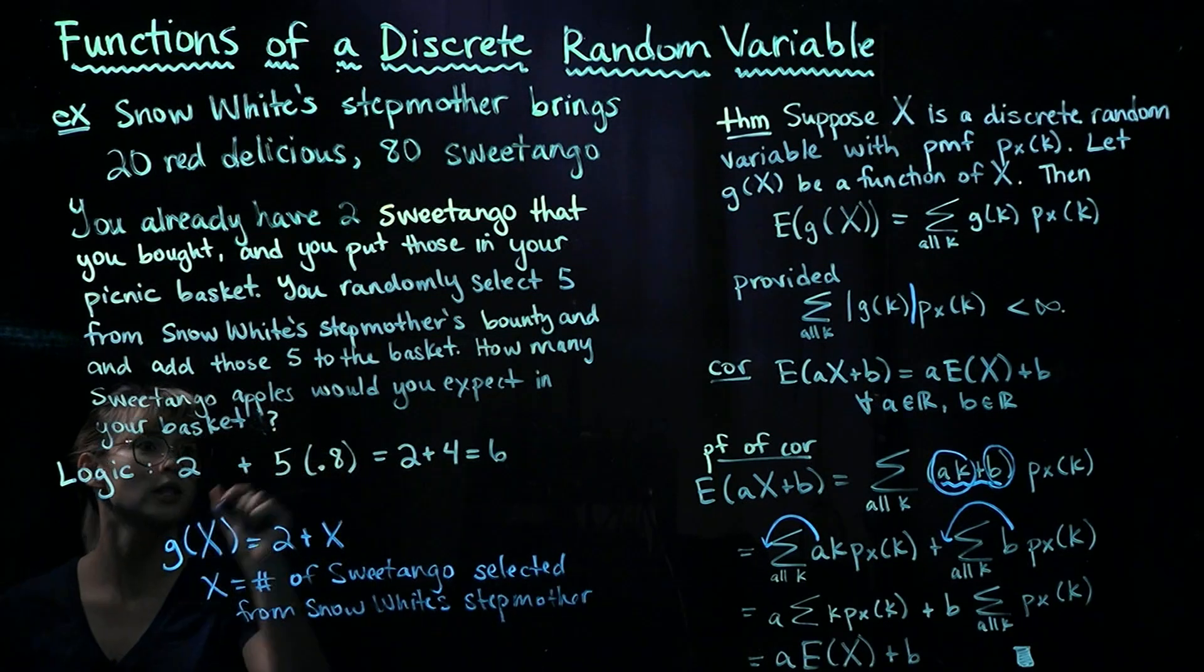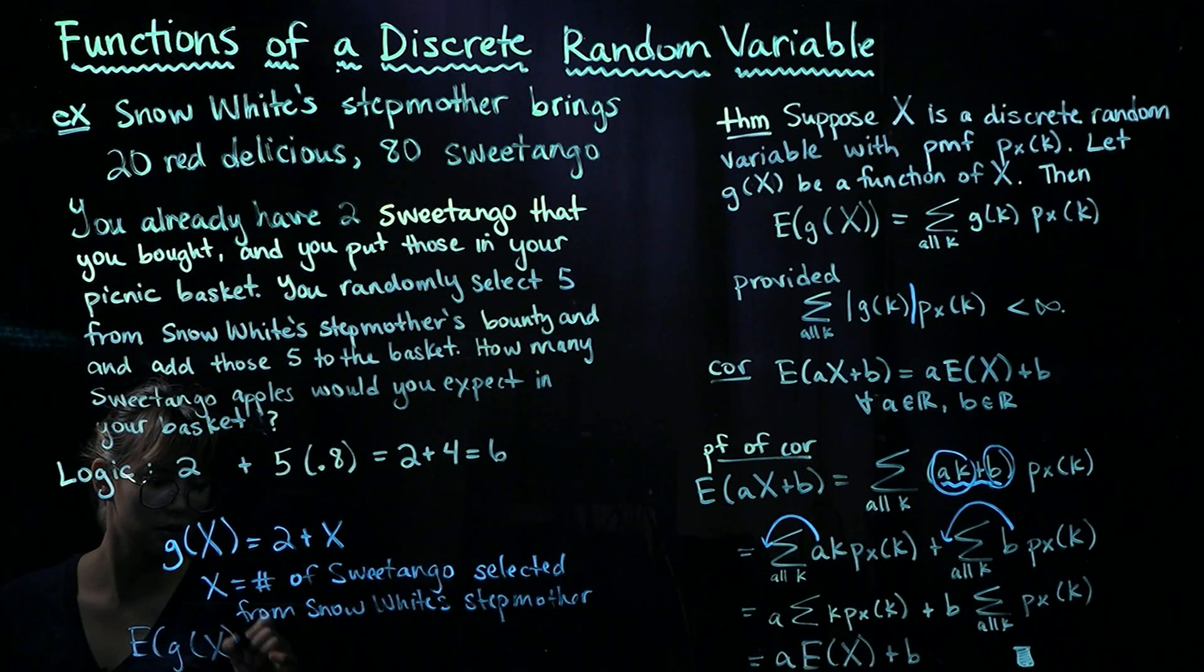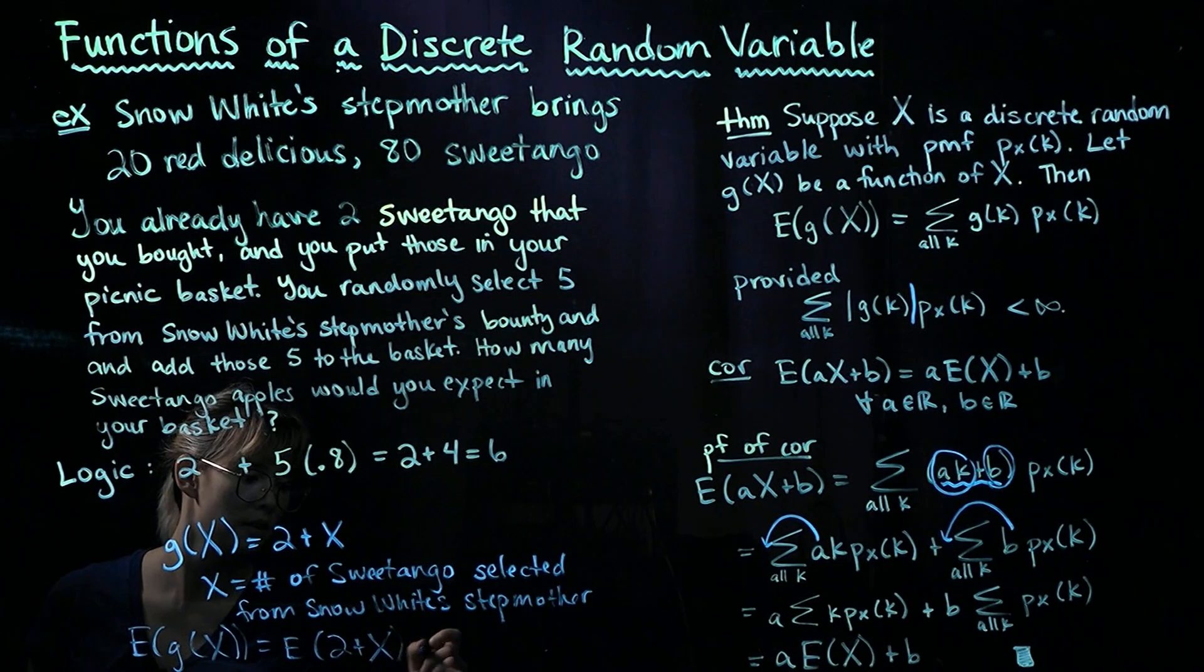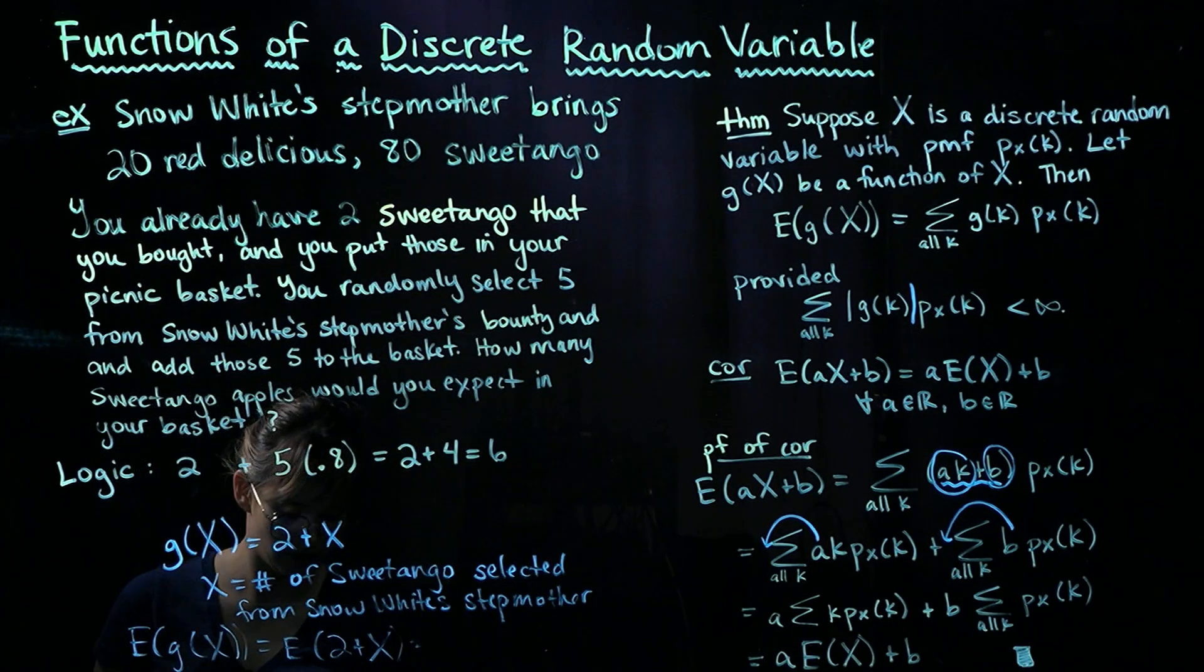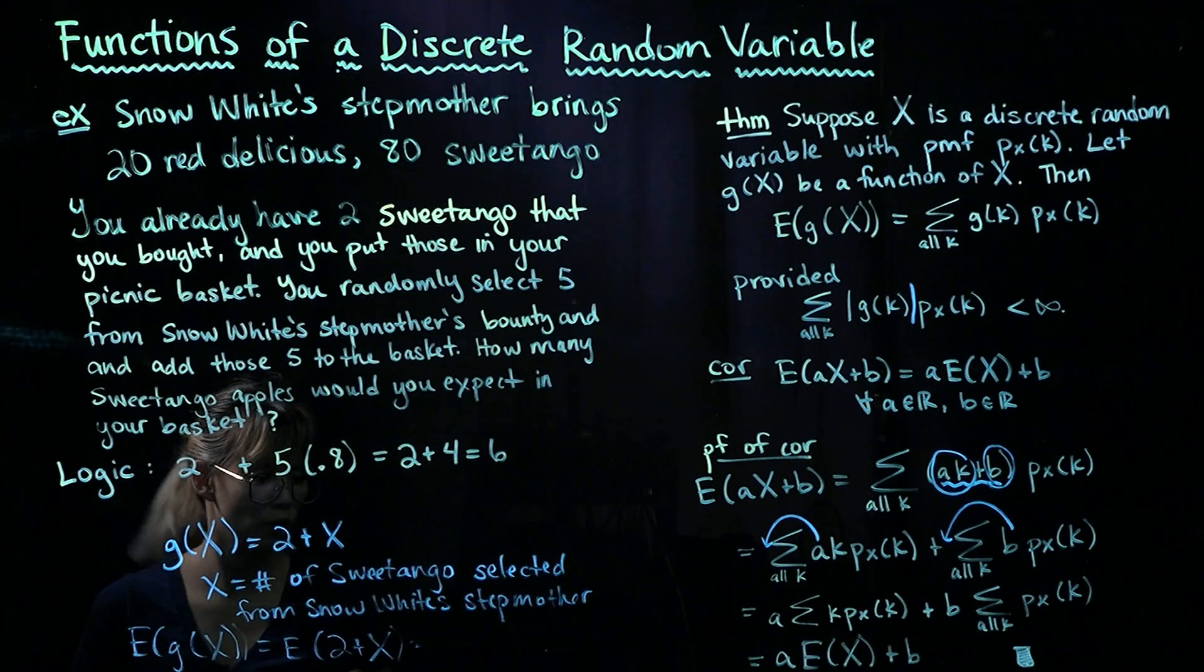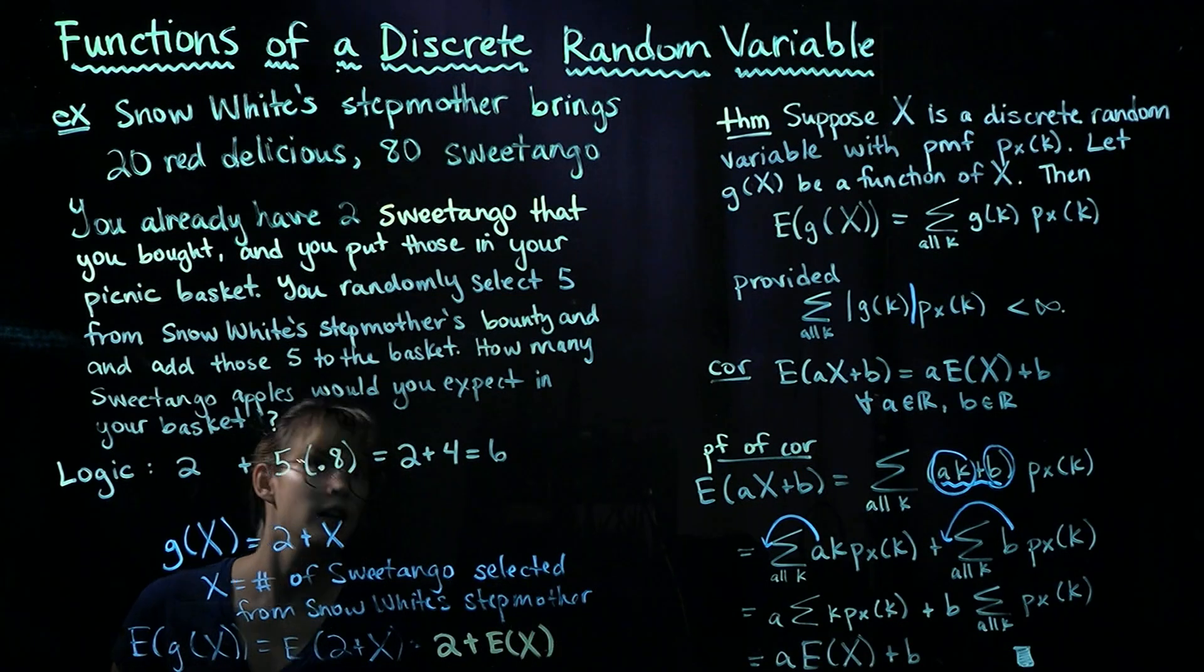So then, since we're looking for the expected value of this, we're looking for the expected value of 2 + X. We can split this into two expected values, so we end up with the expected value of 2, which is just 2, plus the expected value of X.